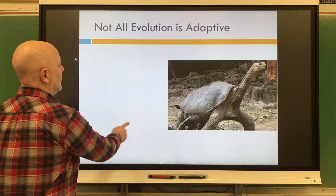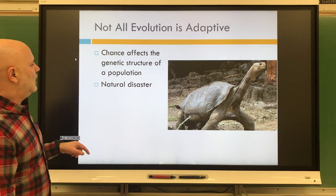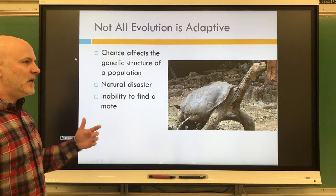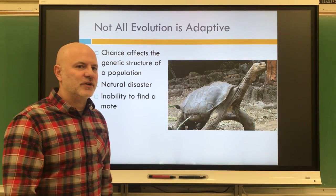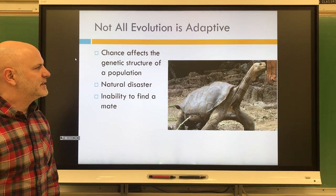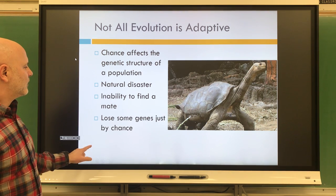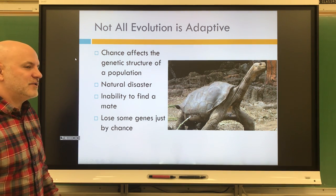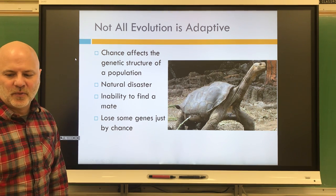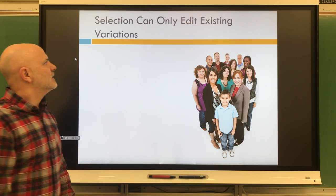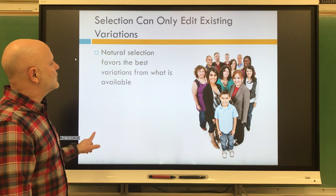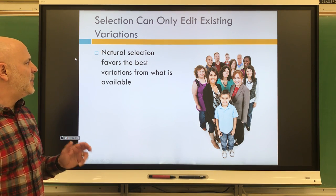Next, not all evolution is adaptive — chance is going to affect the genetic structure of a population. Natural disasters can affect this, as can the inability to find a mate. I'm showing Lonesome George here; unfortunately George died a few years ago, he was the last of his kind. You can lose some genes just by chance, as some rare genotypes may not get to reproduce.